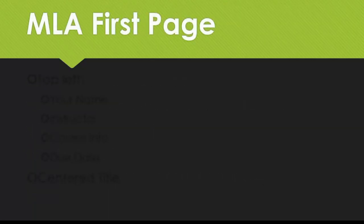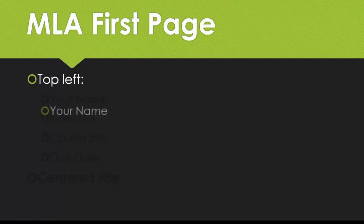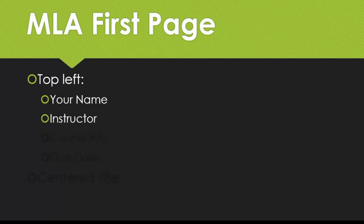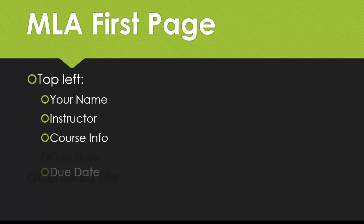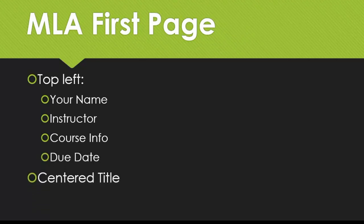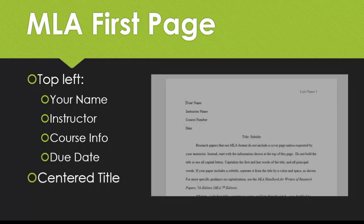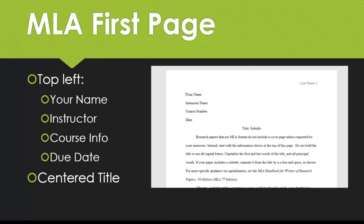Your information appears in the top left-hand corner of the text of your first page. You'll include your name, your instructor's name, the course number, and the date you're submitting your assignment. The next line will be your title, centered. Then, on the next line, begin writing the text of your paper.